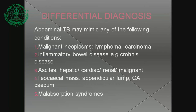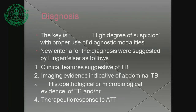Abdominal tuberculosis may mimic any of the following conditions: malignant neoplasms, lymphoma, carcinoma, inflammatory bowel disease, Crohn's disease, ascites (hepatic, cardiac, renal, malignant), ileocecal mass, appendicular lump, and malabsorption syndrome.